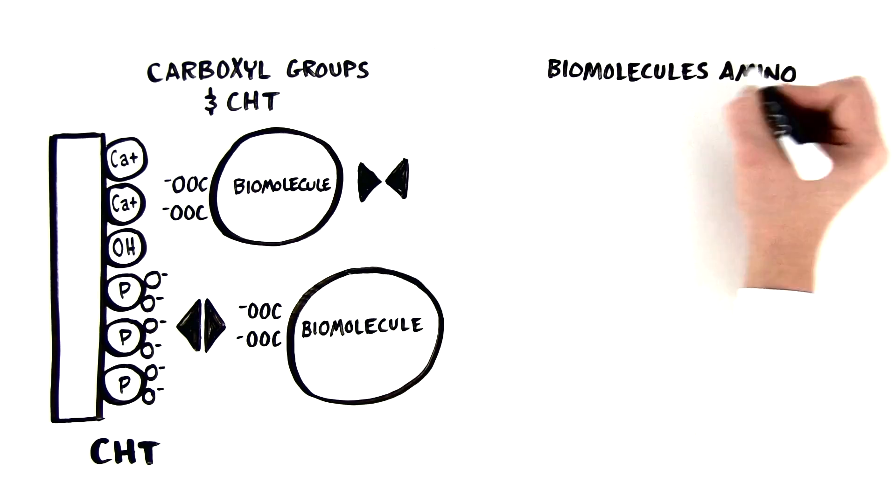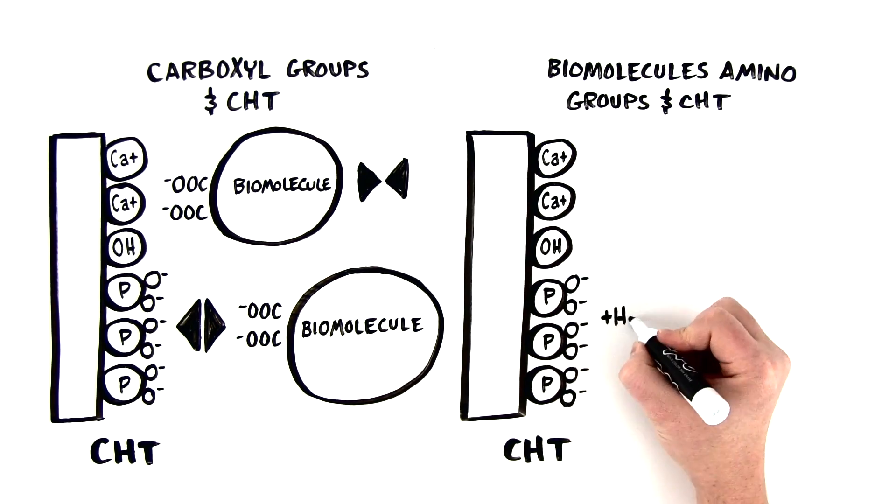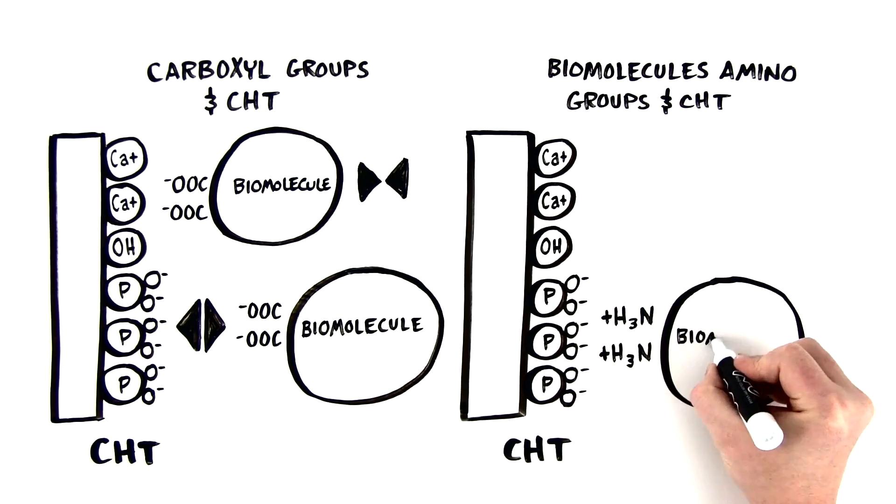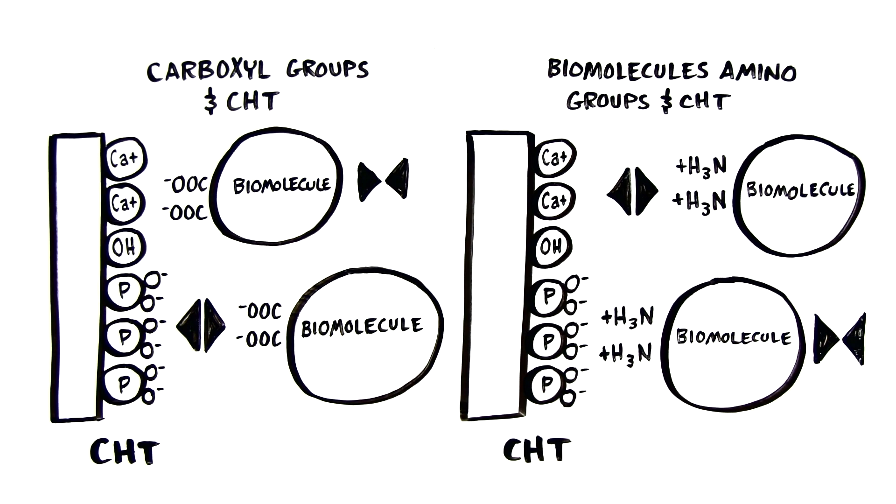Now, here's the interaction between biomolecules amino groups and CHT. The amino groups are attracted to the negatively charged phosphate groups. In addition, note the repulsion of amino groups from the calcium site. The mechanism by which proteins interact with CHT is thus multifaceted.